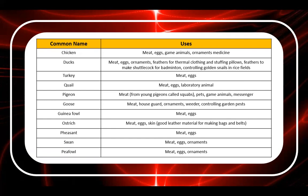Turkey: meat and eggs. Quail: meat and eggs, also used as laboratory animals. Pigeon: meat from young pigeons called squabs, pets, game animals, and messenger birds. Goose: meat, house guard, ornaments, and controlling garden pests. Guinea fowl: meat and eggs. Ostrich: meat, eggs, and skin — good for leather materials in making bags and belts. Pheasant: meat and eggs. Swan: meat, eggs, and ornaments. Peafowl: meat, eggs, and ornaments.